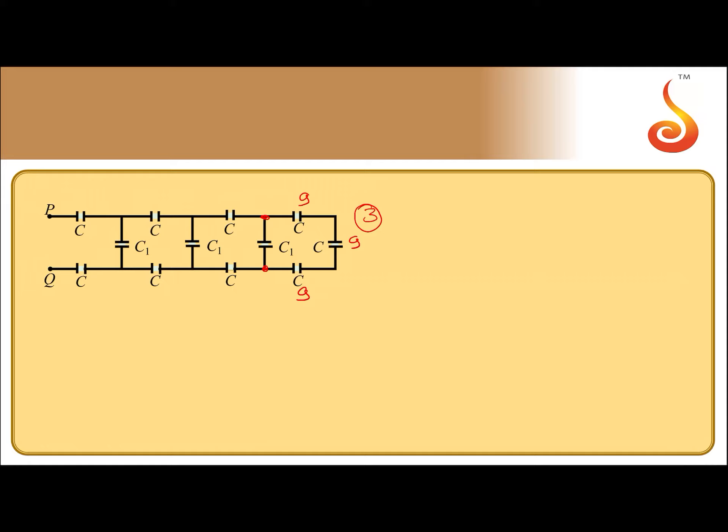This 3 is in parallel with C1, this is 6. So, 6 plus 3, this entire thing put together, it will become 9.